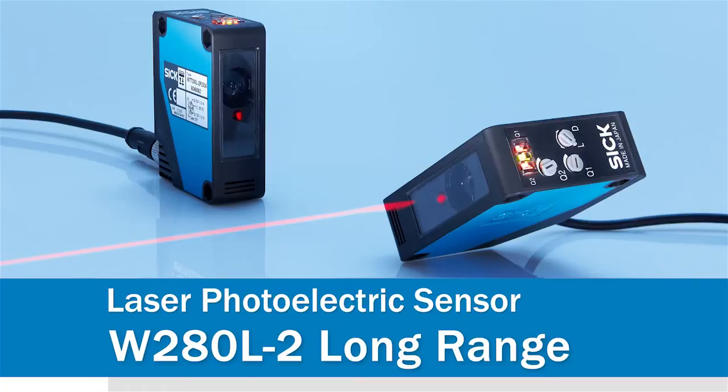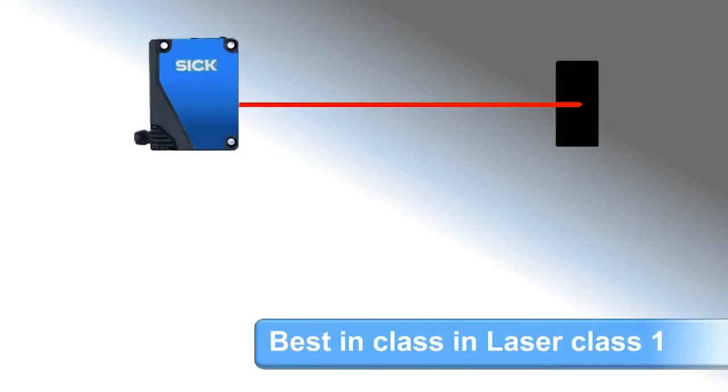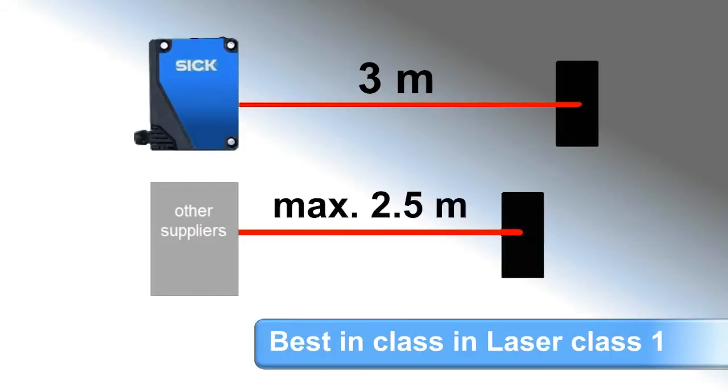W280 Long Range, the new laser sensor. The W280 Long Range can handle the largest of sensing distances, detecting black targets at up to 3 meters, compared to other suppliers who can only reach 2.5.